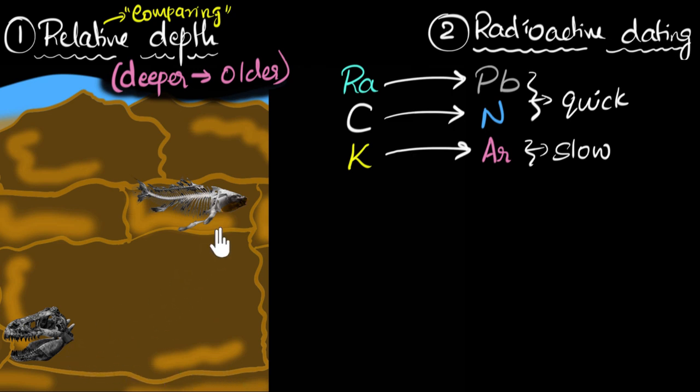And so if you want to date these very, very ancient fossils, fossils that might have lived millions of years ago, let's say, then it'll make a lot of sense to use these slower ones. We'll see why. But how does it work?